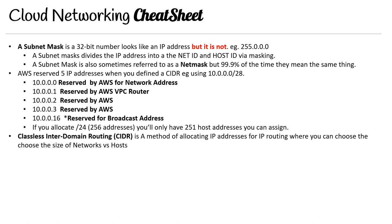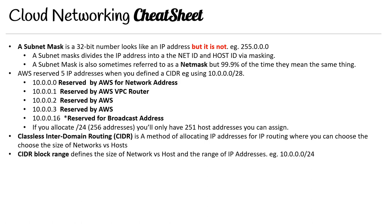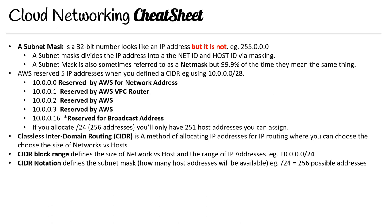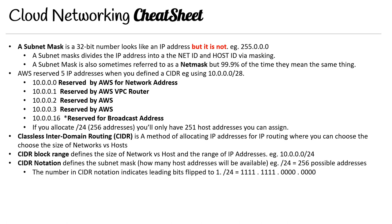Classless Inter-Domain Routing, or CIDR, is the whole reason we've been covering cloud networking and all this background knowledge. It's a method for allocating IP addresses for IP routing, where you choose the size of the network versus hosts. With classical addressing the sizes are very defined, but with CIDR we can have whatever size network we want. A CIDR block range defines the size of the network versus hosts and the range of an IP address. The forward-slash notation defines the subnet mask and how many host addresses will be available — for example, /24 gives 256 addresses, /25 gives 128, and /16 gives 65,000. The number in the CIDR notation indicates how many leading bits are flipped to one. I recommend you remember those key values and you'll be in good shape. And that's cloud networking.